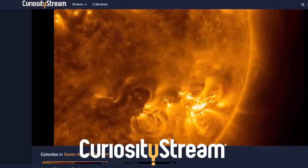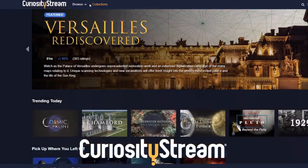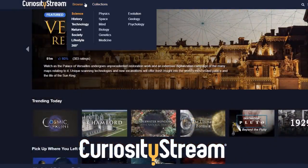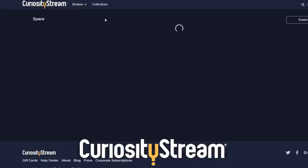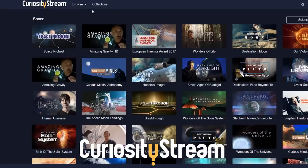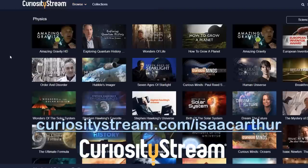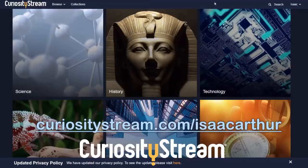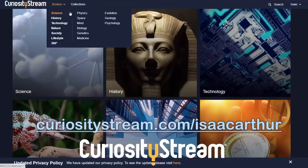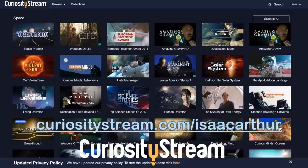CuriosityStream is a subscription streaming service that offers over 2,000 documentaries and non-fiction titles from some of the world's best filmmakers, including exclusive originals. You can get unlimited access starting at just $2.99 a month, and for our audience the first 30 days are completely free if you sign up at CuriosityStream.com/IsaacArthur during the signup process.